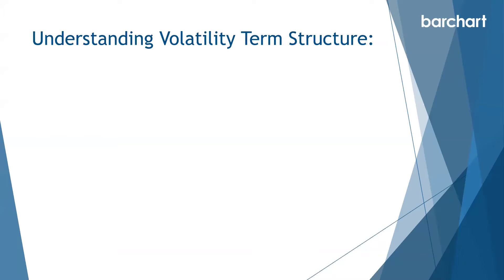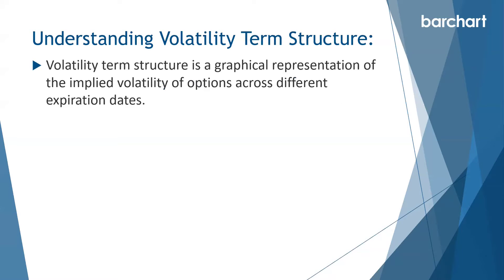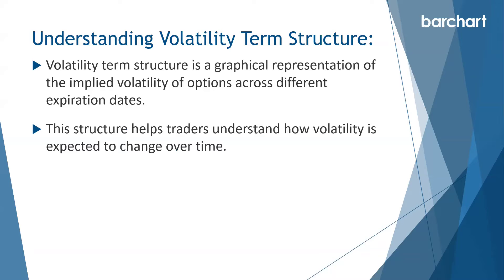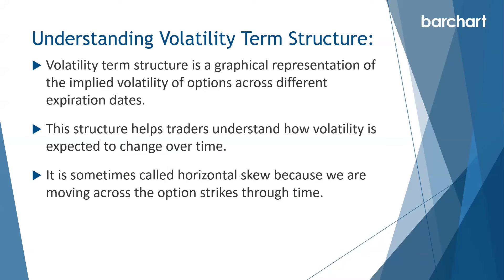Volatility term structure is a graphical representation of the implied volatility of options across different expiration dates. This structure helps traders understand how volatility is expected to change over time. It is sometimes called horizontal skew because we are moving across the option strikes through time.